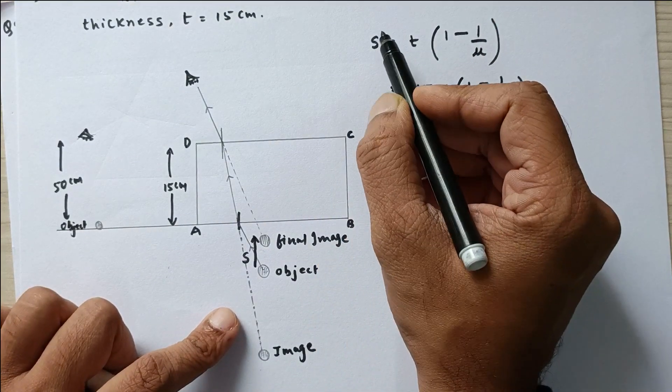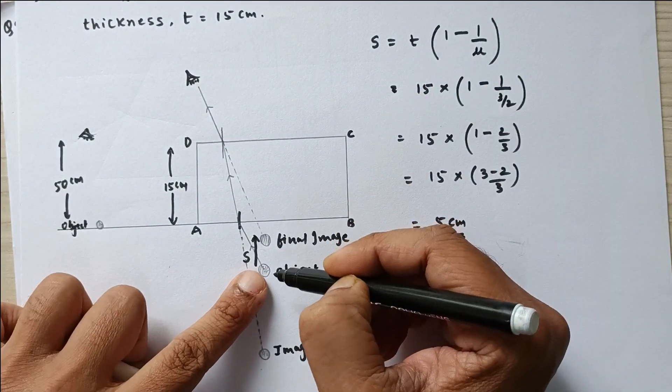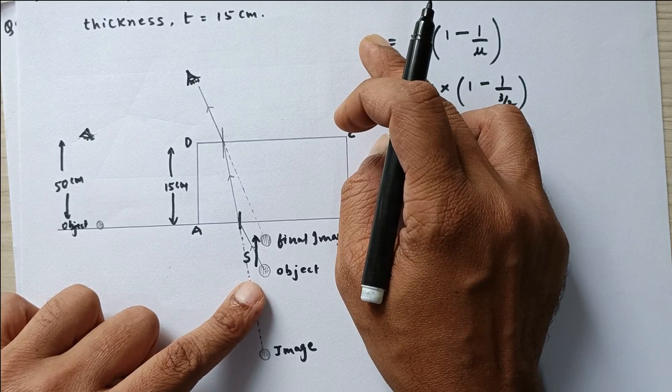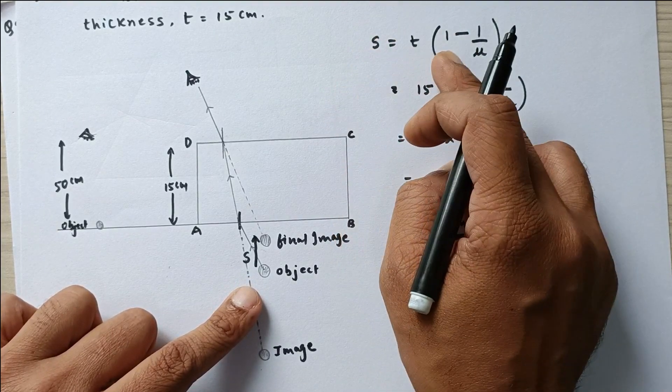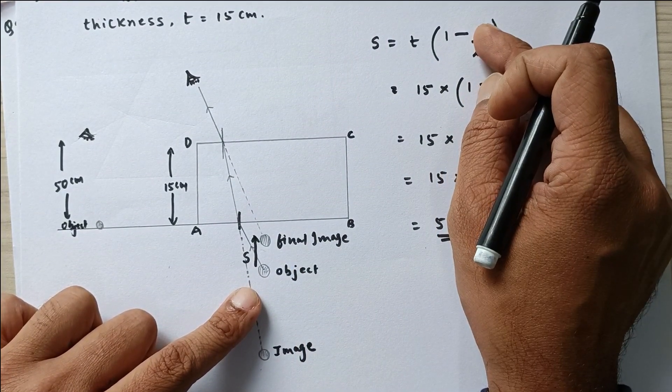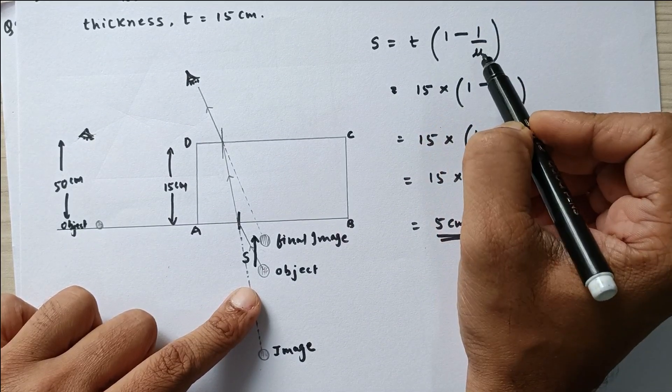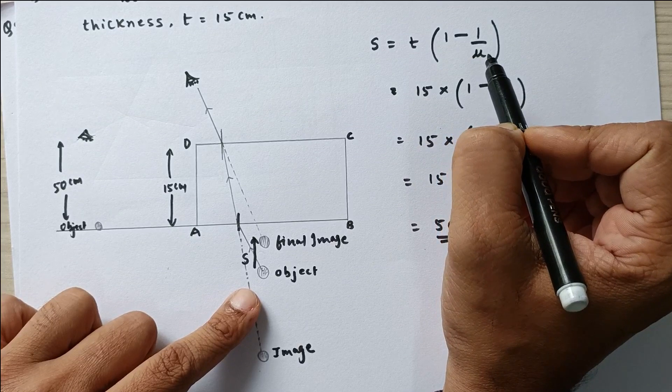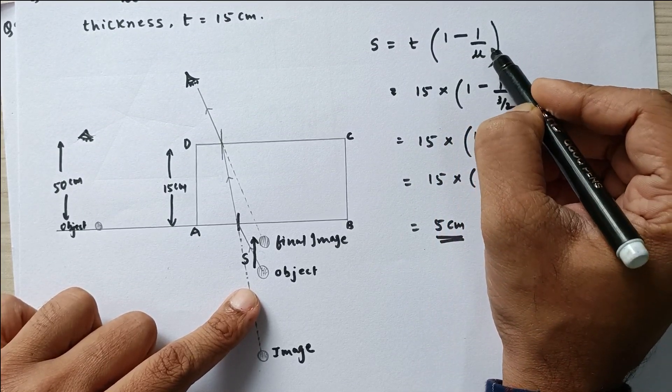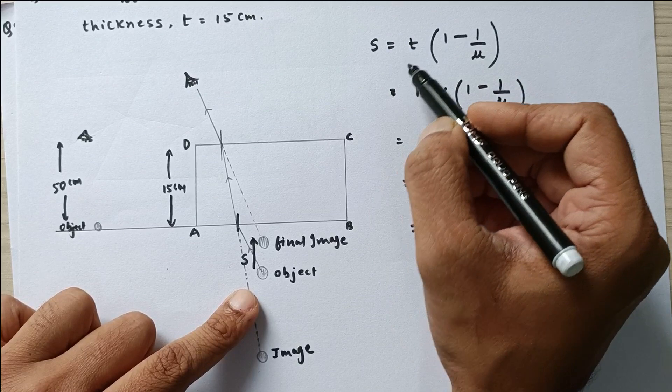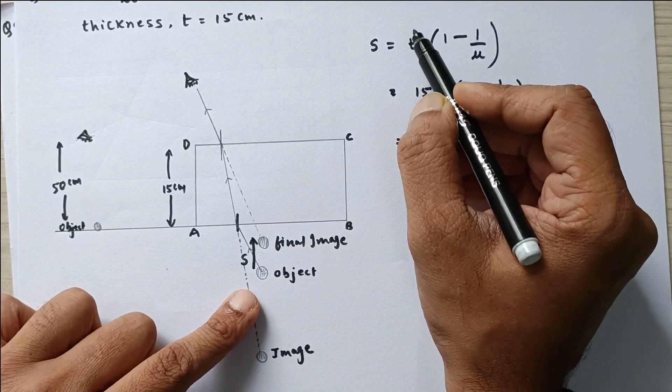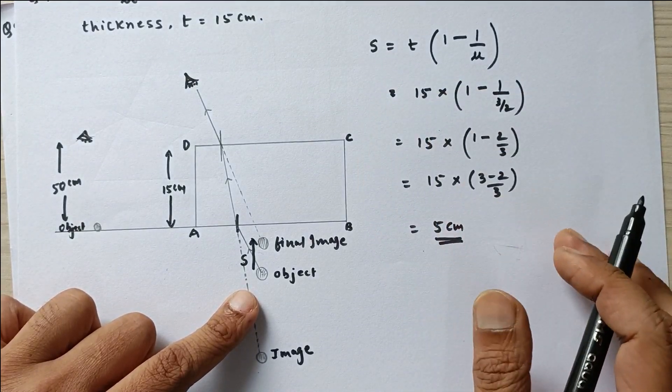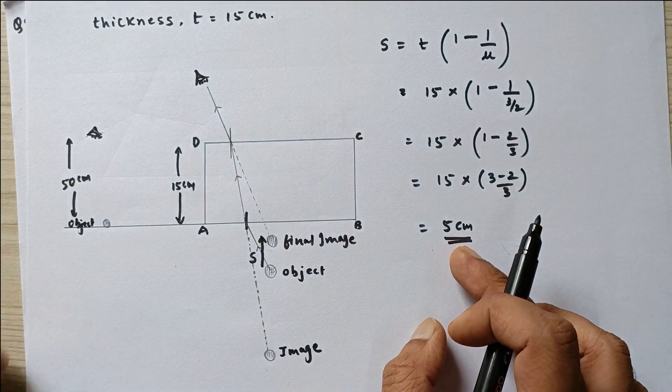Now you can see very clearly that the shift does not depend upon the position of the object. It is because nowhere in the formula is the position of the object highlighted. It only depends upon two things: directly proportional to the thickness and directly proportional to the refractive index. Because if μ increases this will decrease and the shift will increase, and if t increases then also the shift is going to increase. So this is the final answer.